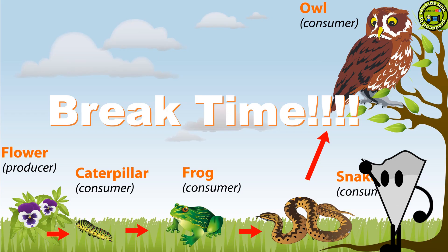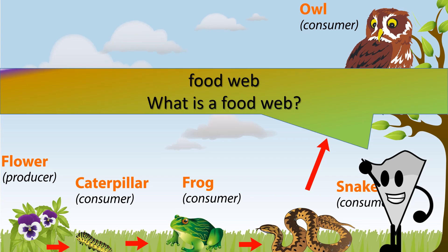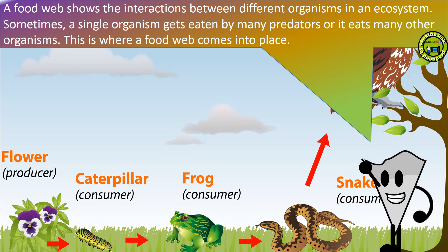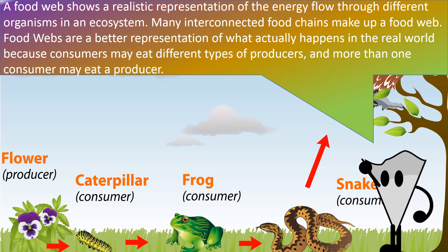Break time! Welcome back, kids. Food web. What is a food web? A food web shows the interactions between different organisms in an ecosystem. Sometimes a single organism gets eaten by many predators, or it eats many other organisms — this is where a food web comes into place. A food web shows a realistic representation of the energy flow through different organisms in an ecosystem. Many interconnected food chains make up a food web. Food webs are a better representation of what actually happens in the real world because consumers may eat different types of producers, and more than one consumer may eat a producer.